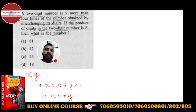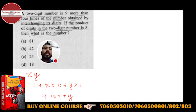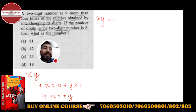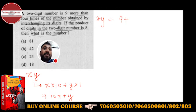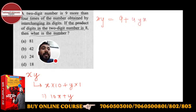A two-digit number xy is nine more than four times the number obtained by interchanging its digits. When you interchange the digits of xy, you get yx. So mathematically, the two-digit number xy is nine more than four times the interchanged number yx.